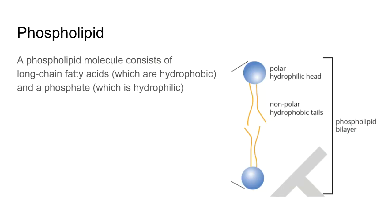When we refer to the phospholipid, we're talking about this molecule shown here. A phospholipid is a long-chain fatty acid. The little yellow lines are off the phosphate head. The phosphate part of the molecule is hydrophilic — it loves water — and the long-chain fatty acids are hydrophobic, so they don't like water.